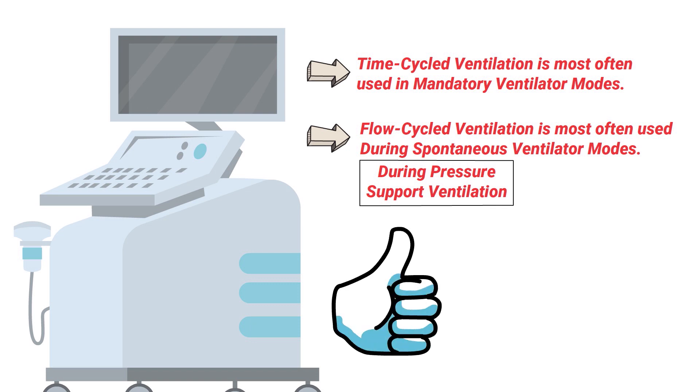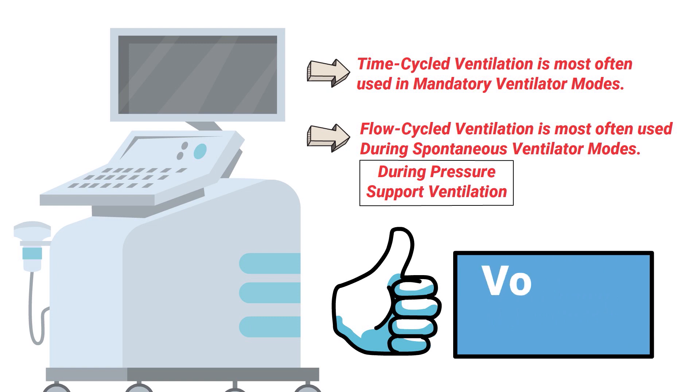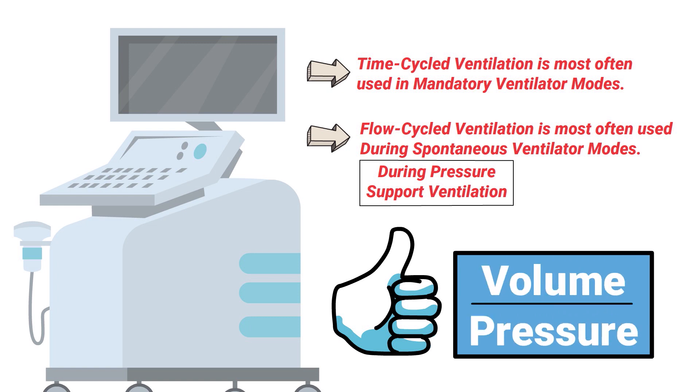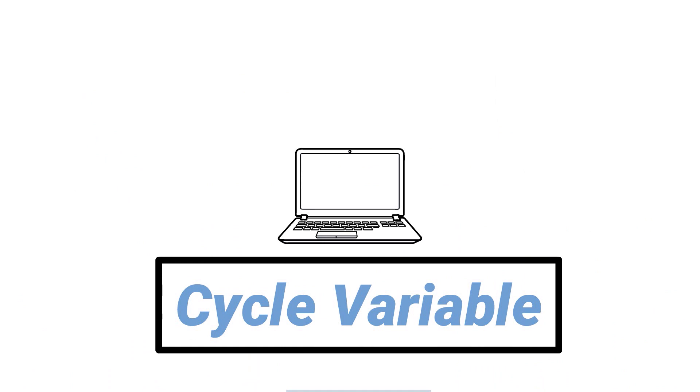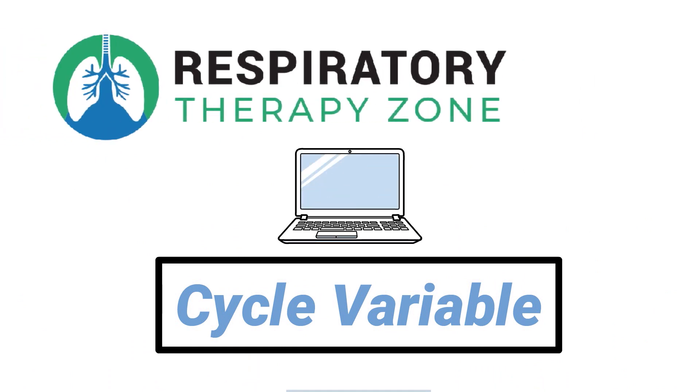You should note that the two most commonly used control variables in mechanical ventilation are volume and pressure. Again, for this video we just wanted to provide you with a brief overview of this topic.